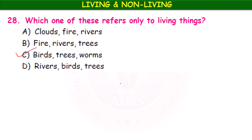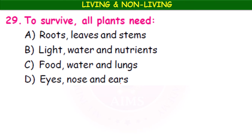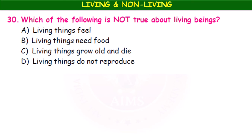To survive, all plants need — roots, leaves, and stems; light, water, and nutrients; food, water, and lungs; or eyes, nose, and ears? Option B — light, water, and nutrients — are required by plants to survive. Which of the following is NOT true about living beings? Living things do not reproduce — this is the false option, so that is the answer.